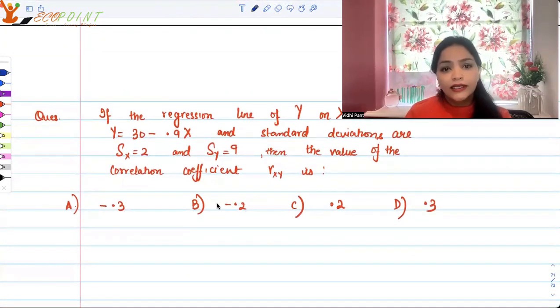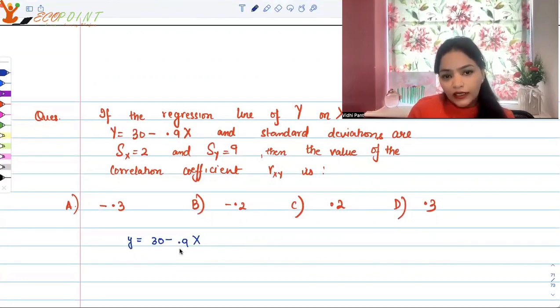What data do we have again? Standard deviations are given, regression line we have. In the regression line, what do we have? y equals 30 minus 0.9x. So in the regression line, what you see here, this 0.9, what is this? This is the regression coefficient.